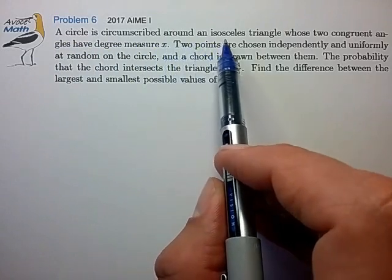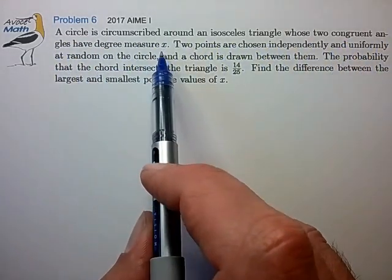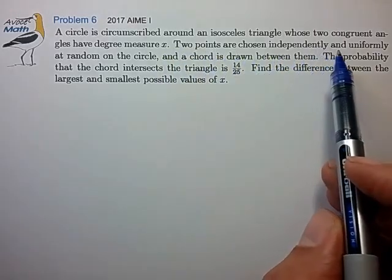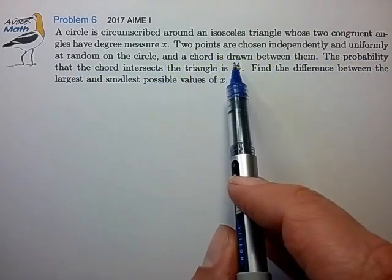A circle is circumscribed around an isosceles triangle whose two congruent angles have degree measure X. Two points are chosen independently and uniformly at random around the circle, and a chord is drawn between them.